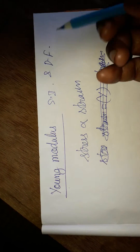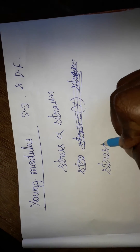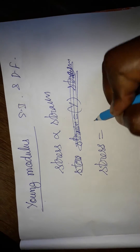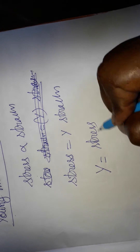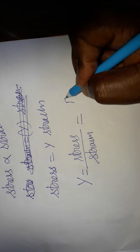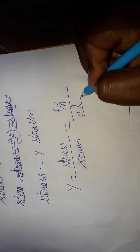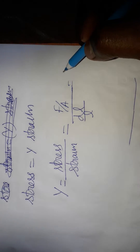Today we are going to see Young's modulus: its SI unit and dimensional formula. As we know, stress is directly proportional to strain. Stress equals modulus of elasticity times strain, so modulus of elasticity is equal to stress divided by strain. Stress is force per unit area; strain is change in length by original length.